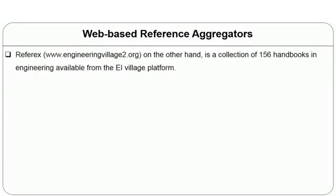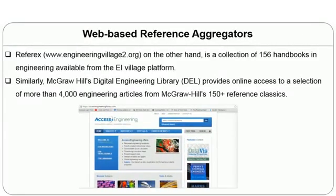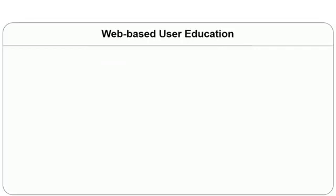Engineering Village 2 provides a collection of 156 handbooks in engineering from the Elsevier Village platform. Similarly, McGraw-Hill Digital Engineering Library (DEL) provides online access to a selection of more than 4,000 engineering articles from 150 reference classics.